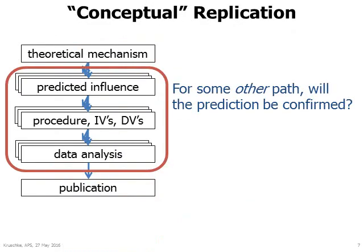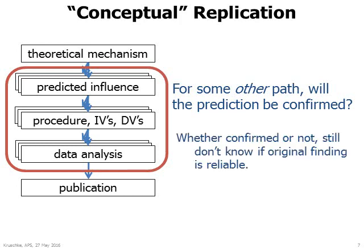But what sort of replication should be conducted? One option is a conceptual replication that tries to test the underlying theoretical mechanism for some other path through the choices. It asks, will the prediction be confirmed? A problem with this approach is that, whether it's confirmed or not, we don't know if the original finding is reliable.